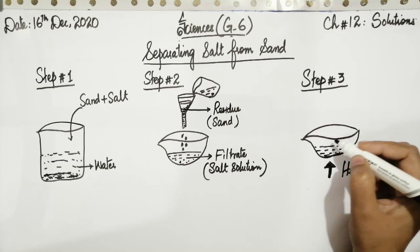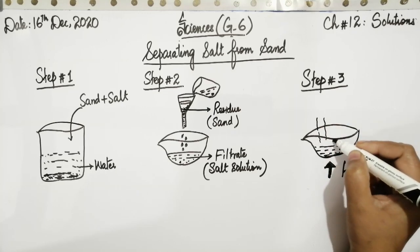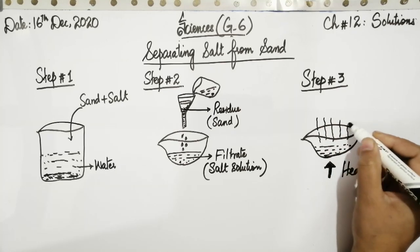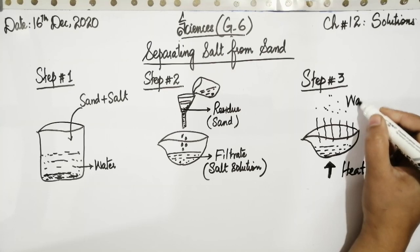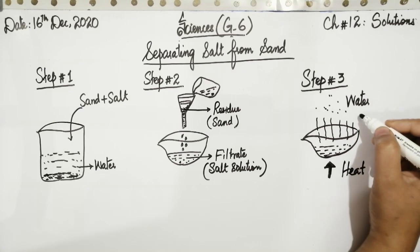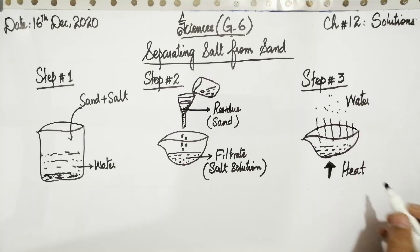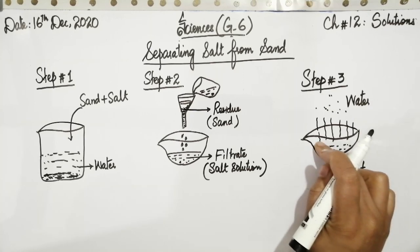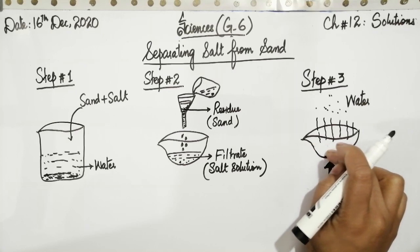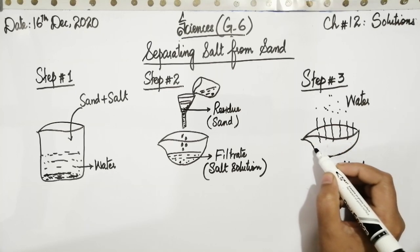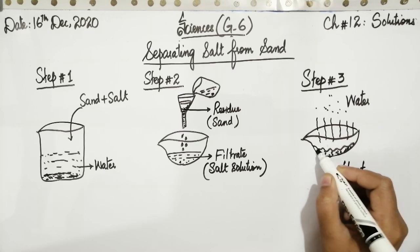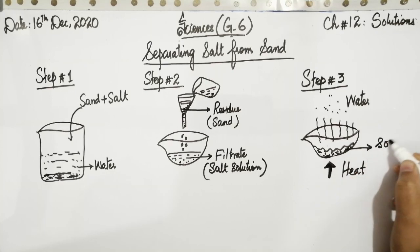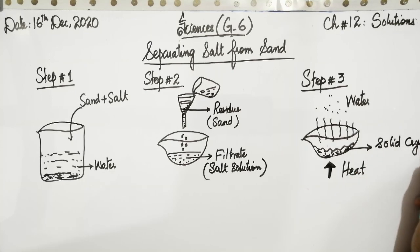after heating, you will observe that the water will be evaporating from the dish in the form of water droplets. This water is not seen to us because these are the gaseous form of the water. The remaining thing, which is left at the bottom or along the side of the wall of the dish, are the solid crystals of salt which will be left behind.